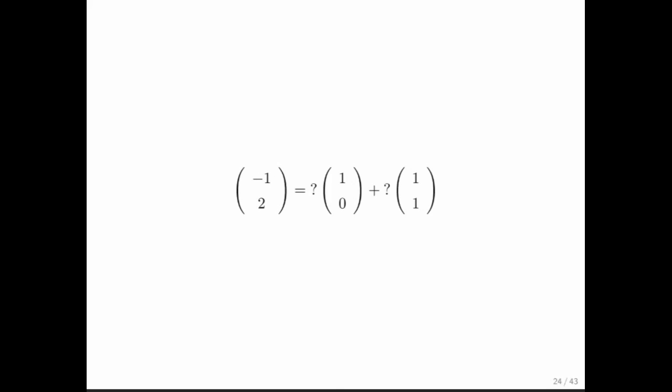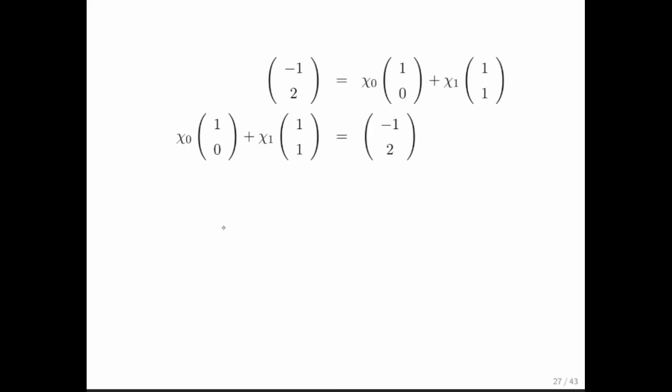How could we have done this in a more systematic way? We could have asked ourselves the question, what are those coefficients? We could have given those names, chi 0 and chi 1. And then again, we could have progressed towards a system of linear equations. And in this particular case, the system of linear equations is an upper triangular system of linear equations. And almost surely you have seen this somewhere before. And what you notice is that you can identify what chi 1 is. It's equal to 2. And then you can replace this by 2 and figure out what chi 0 is. And indeed, chi 0 now is minus 3.